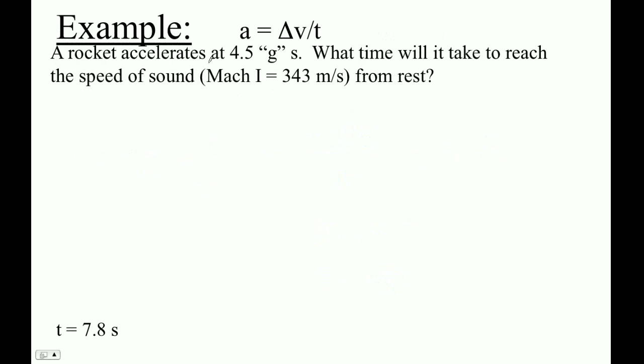So here's a rocket. It accelerates at 4.5 Gs upward. What time will it take to reach the speed of sound, which is 343 meters per second? So we're using this formula, a equals delta v over t. I think my delta v is going to be zero to 343, so it's going to be positive 343. That'll be my delta v.